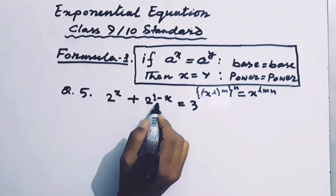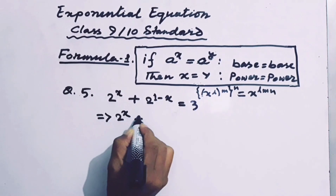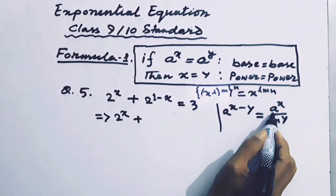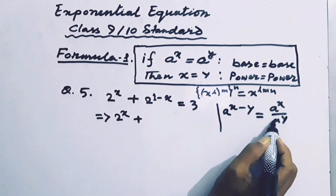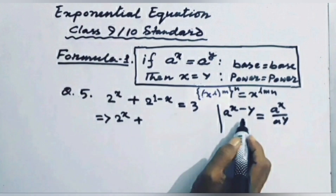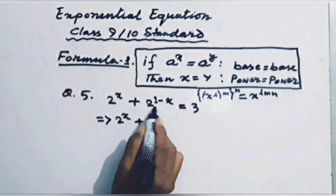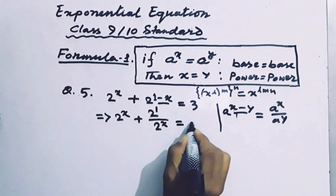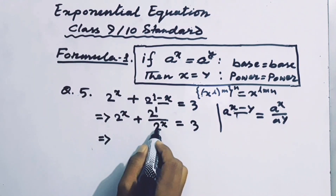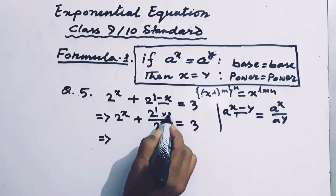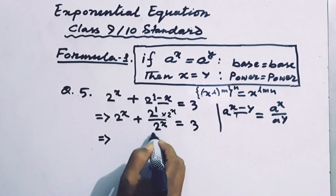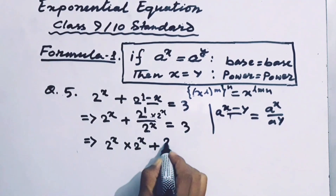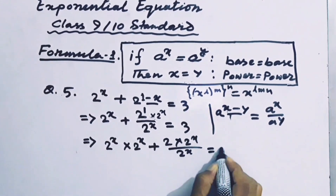First, we separate the parts of the power 2. We write 2ˣ plus — we know that a to the power (x minus y) equals Aˣ divided by Aʸ, that is, division of same-based terms where the powers are in subtractive form. So we can write 2 to the power (1 minus x) equals 2 to the power 1 divided by 2 to the power x, equaling 3. To eliminate the denominator, we multiply by 2ˣ on both sides.